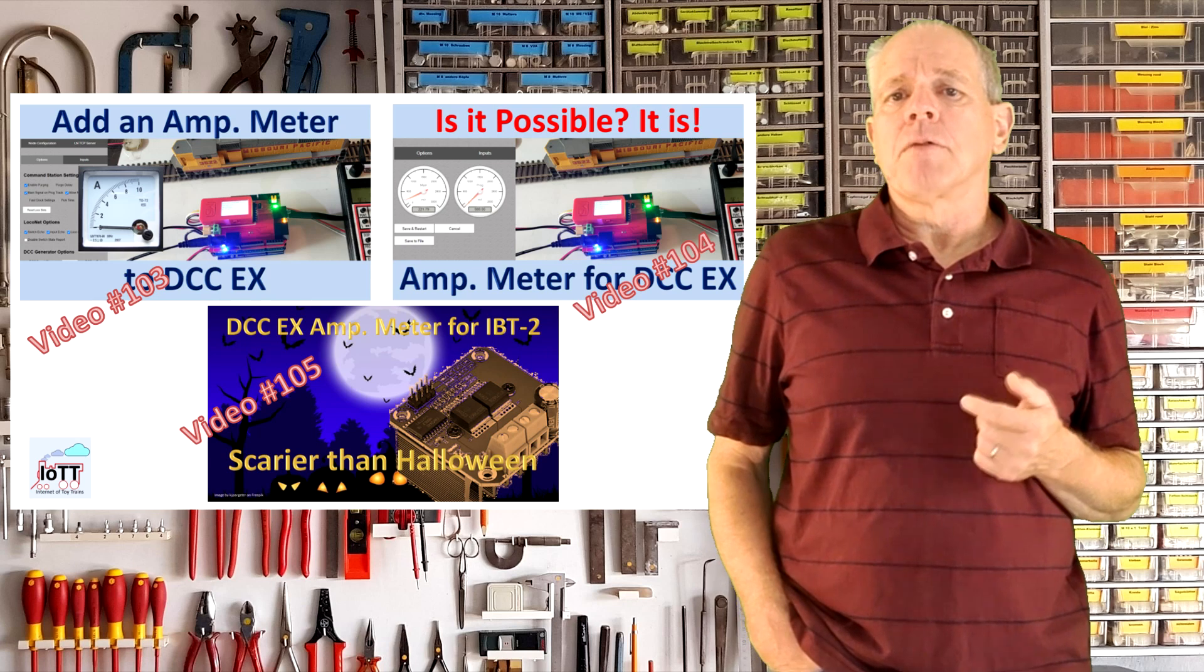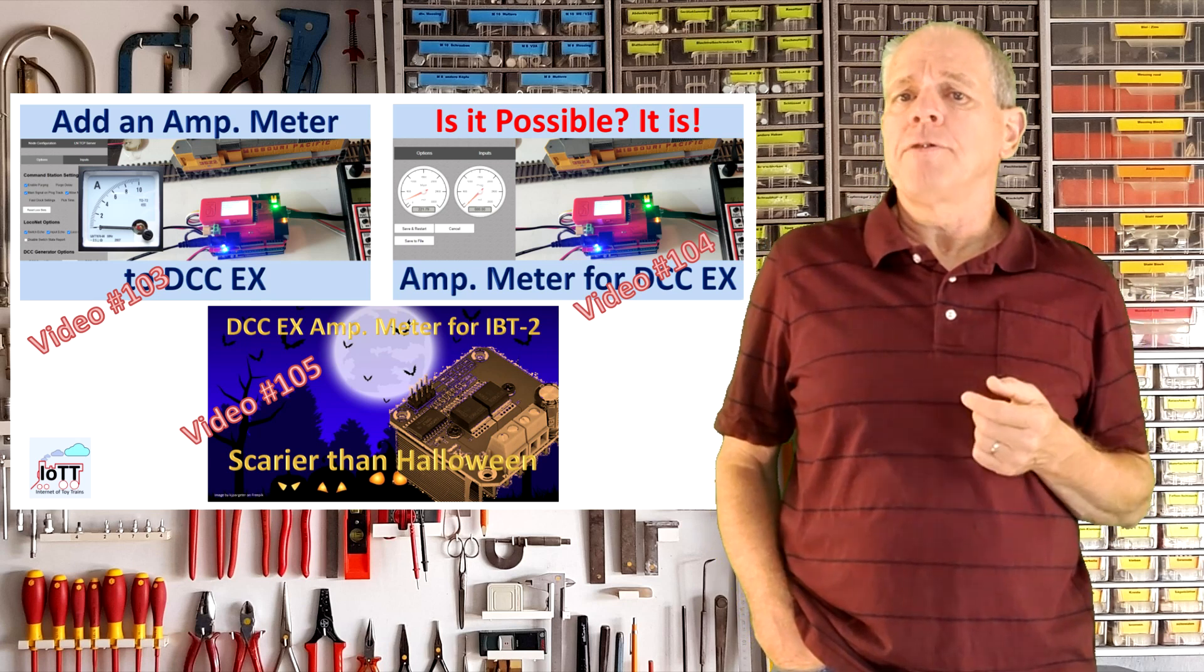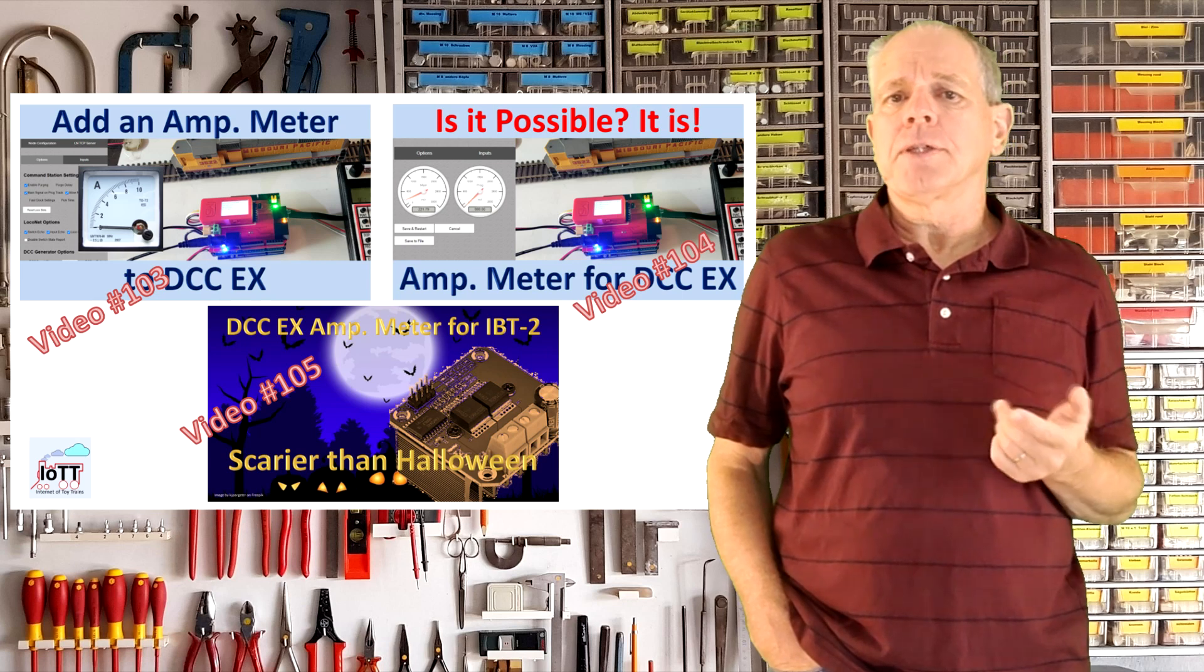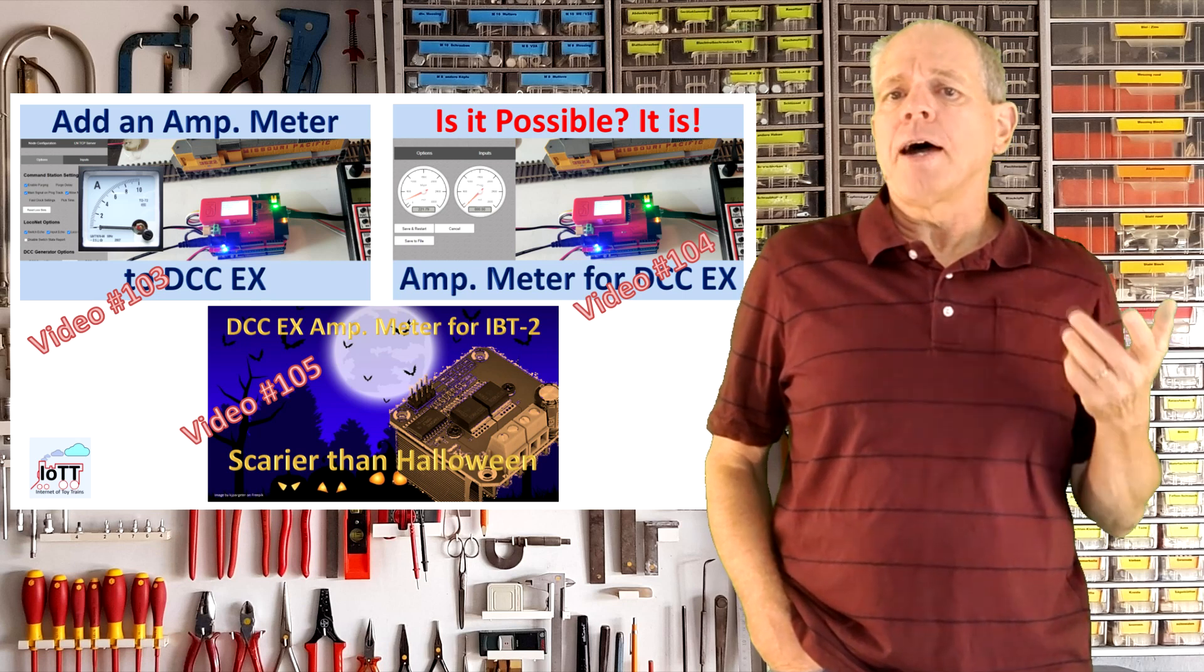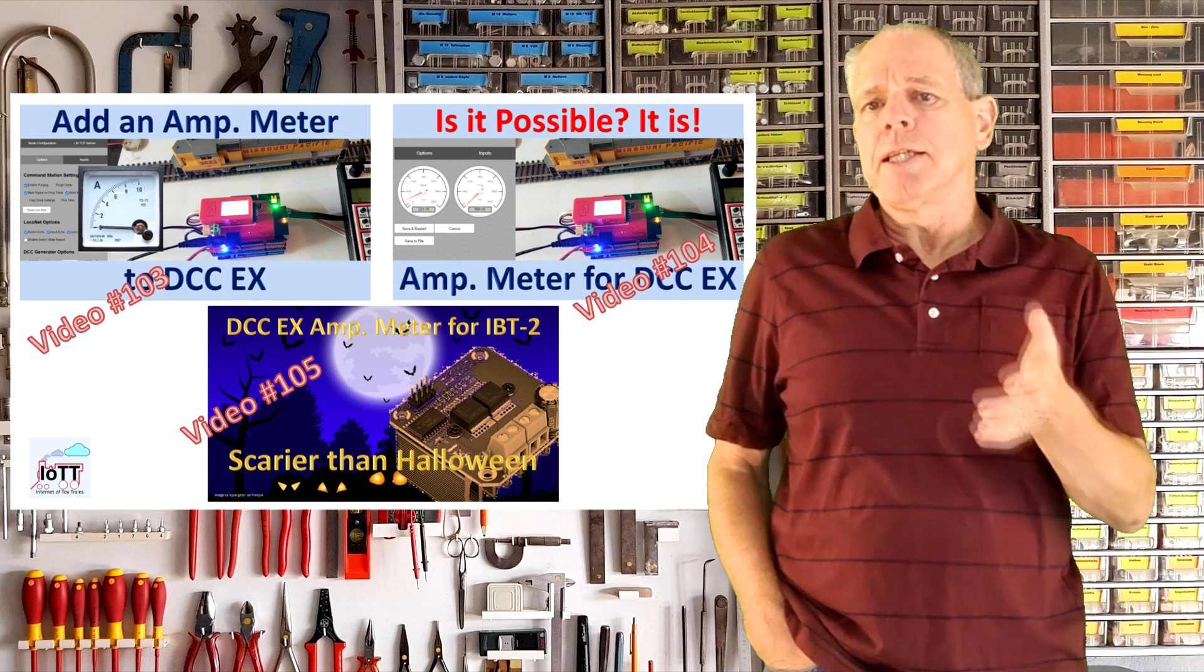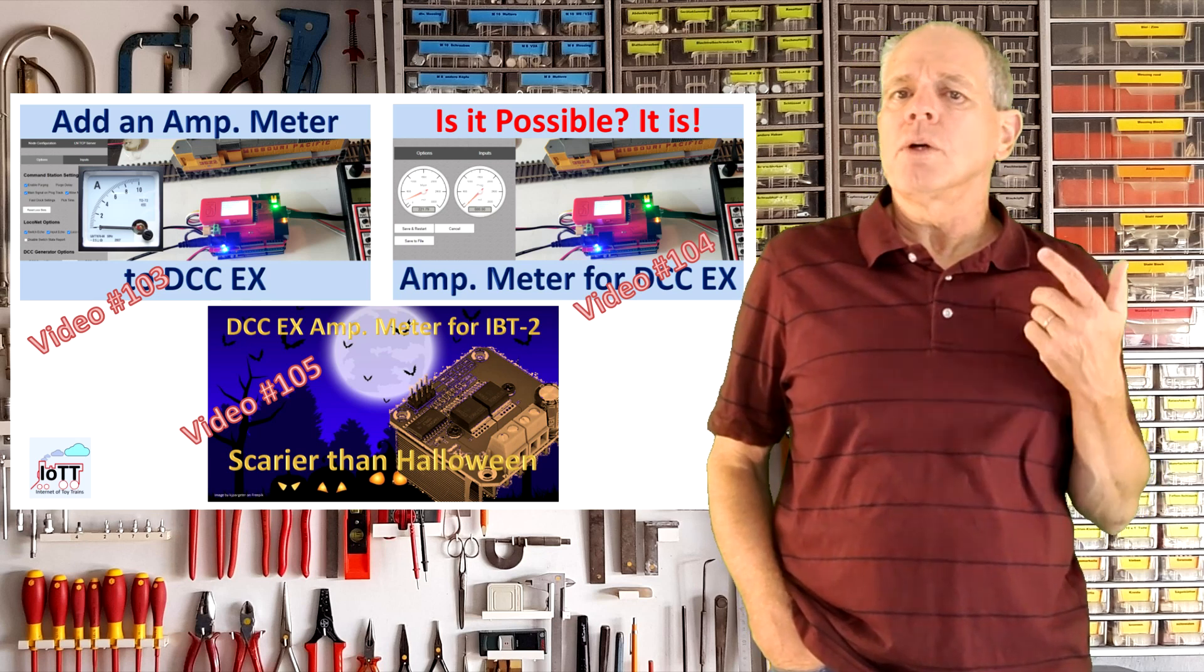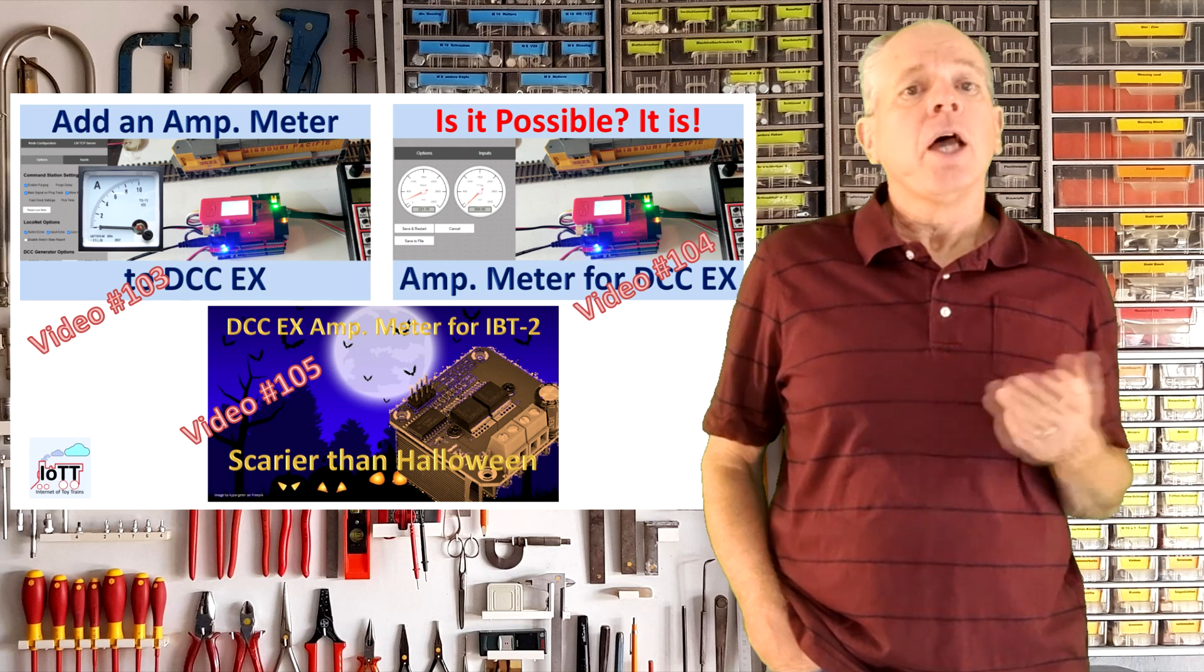As explained in videos number 103, 4 and 5, more or less precise measurement of the track current on the DCC requires sampling at fixed intervals and then calculating the root mean square or RMS value.